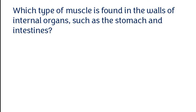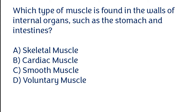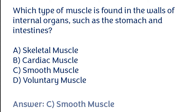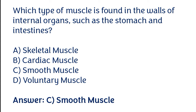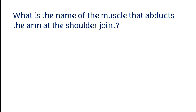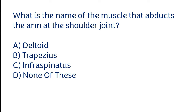Which type of muscle is found in the walls of internal organs such as the stomach and intestines? The correct answer is option A — Deltoid is the name of the muscle that abducts the arm at the shoulder joint.